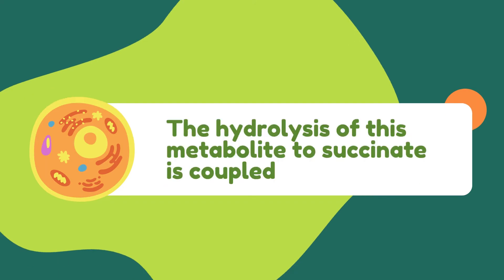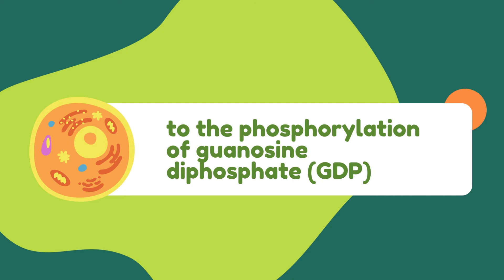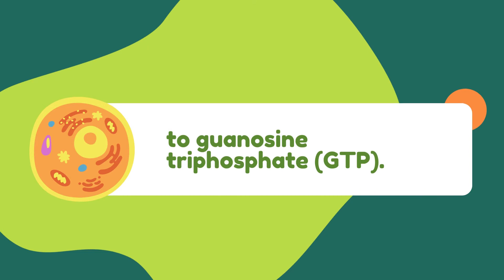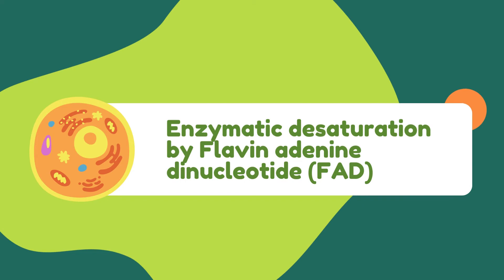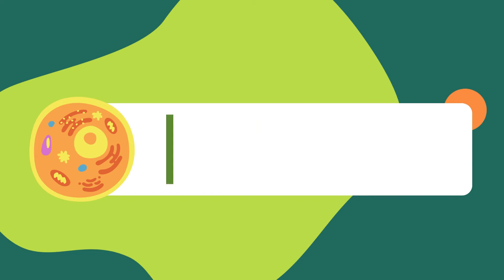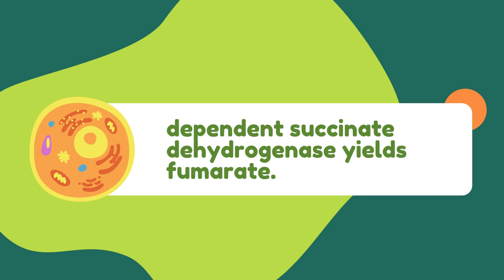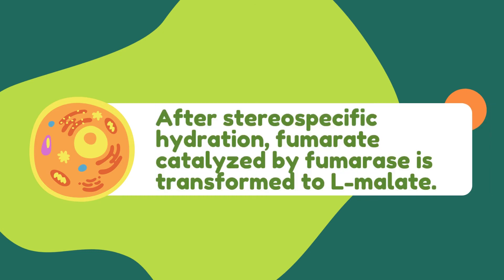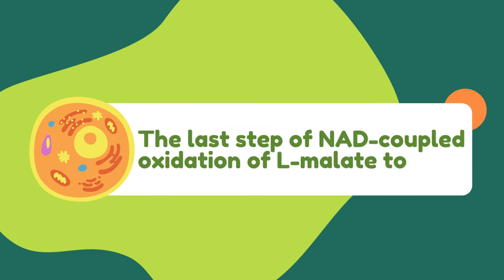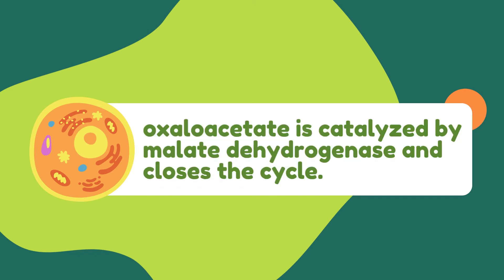The hydrolysis of this metabolite to succinate is coupled to the phosphorylation of guanosine diphosphate (GDP) to guanosine triphosphate (GTP). Enzymatic desaturation by flavin adenine dinucleotide (FAD)-dependent succinate dehydrogenase yields fumarate. After stereospecific hydration, fumarate catalyzed by fumarase is transformed to L-malate.